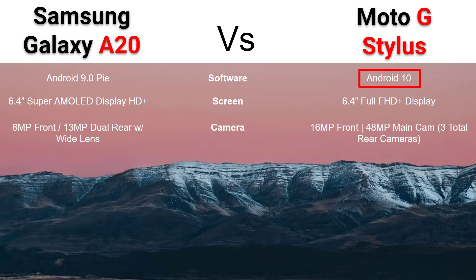Camera-wise, this is where the G Stylus really does shine. It has a 48 megapixel main rear camera and a total of three cameras in the back, plus a 16 megapixel front camera. Whereas the A20 has an 8 megapixel front and a 13 megapixel dual rear camera. The A20 does have a wide angle lens for the front and rear camera, so you'll get some wider shots, but overall the G Stylus does have a better camera.